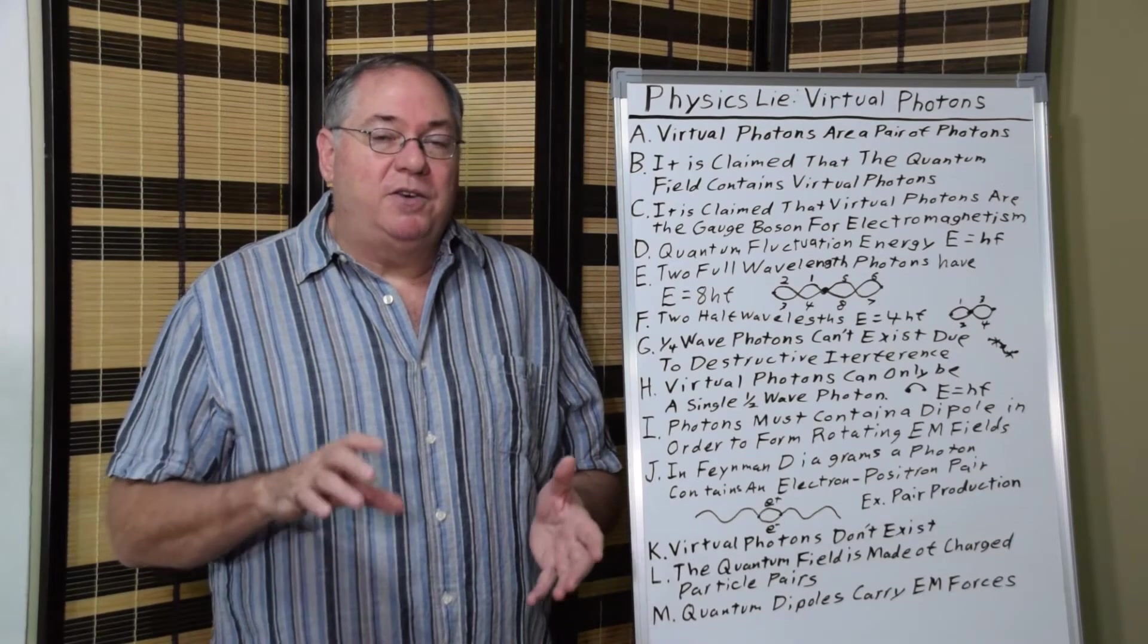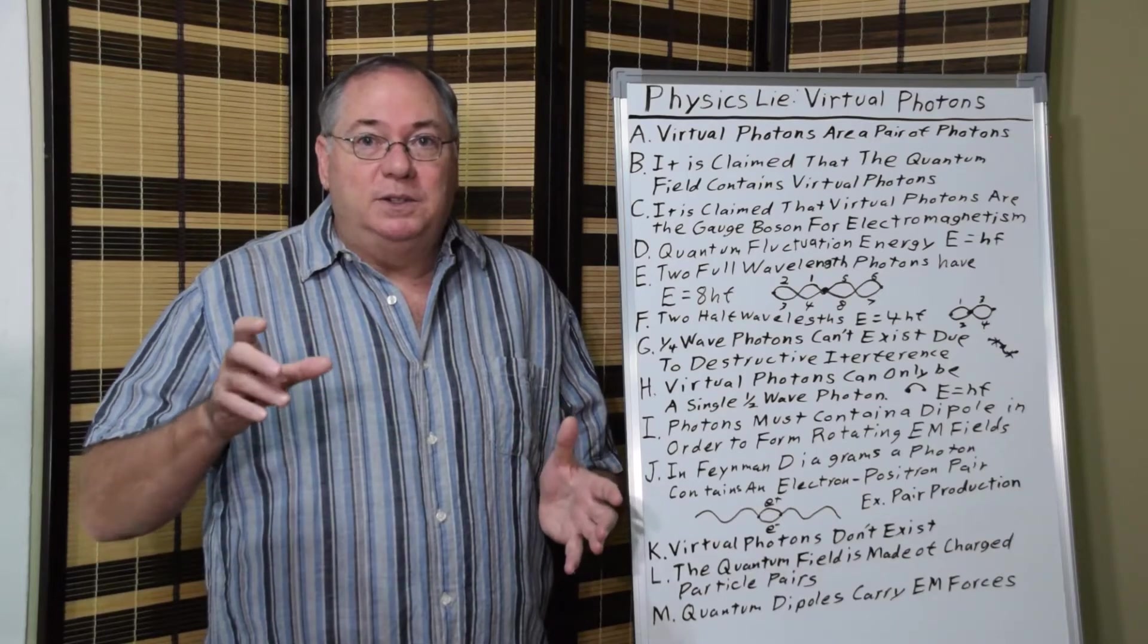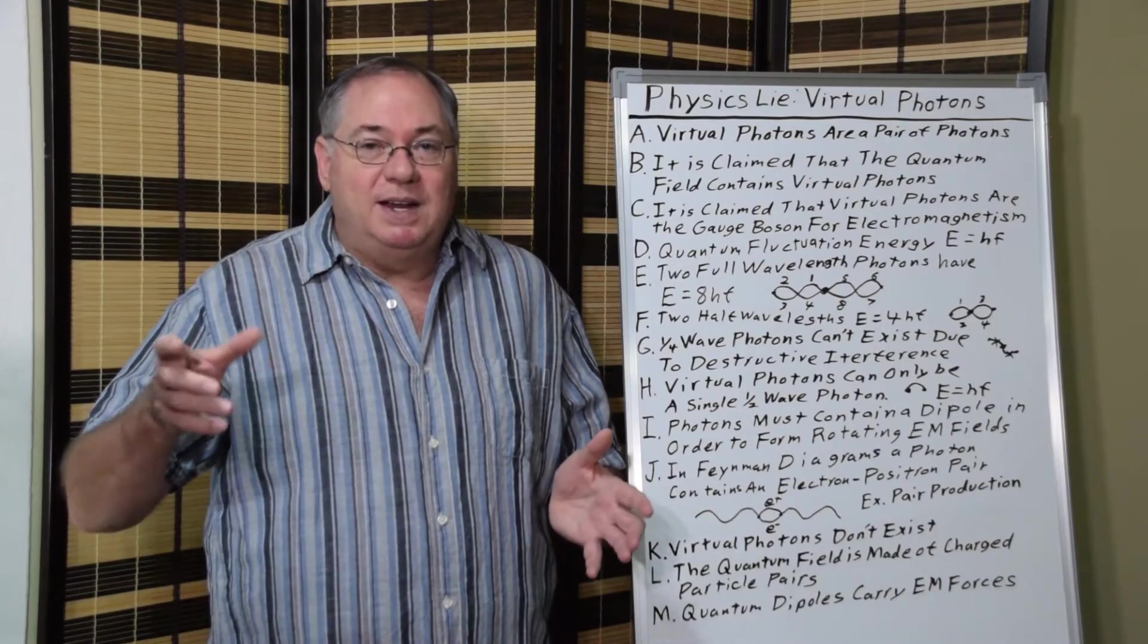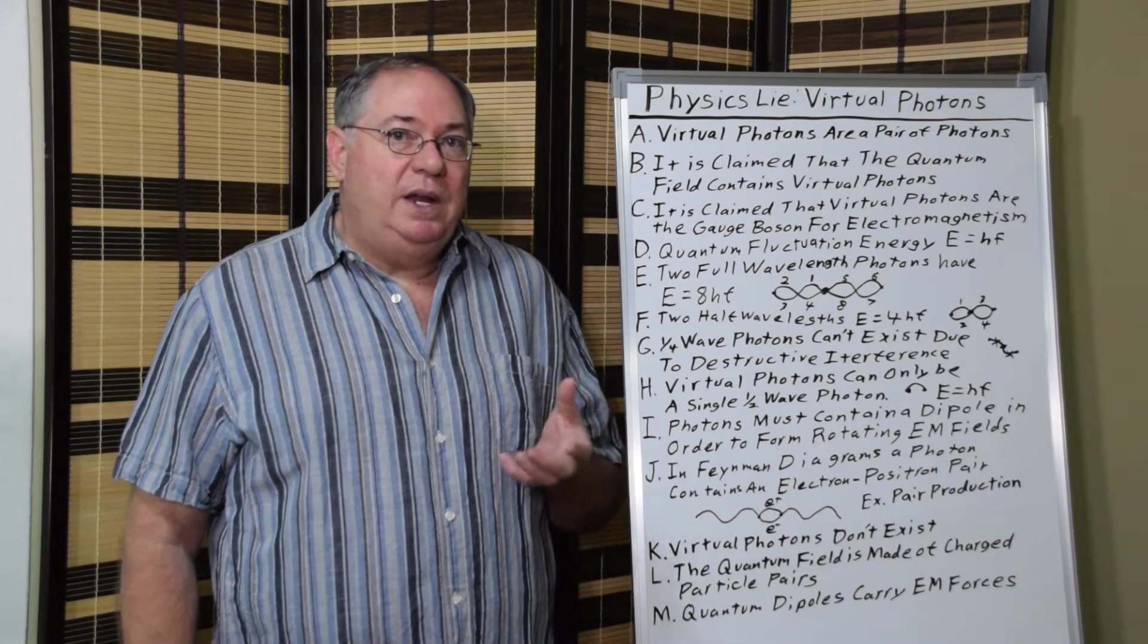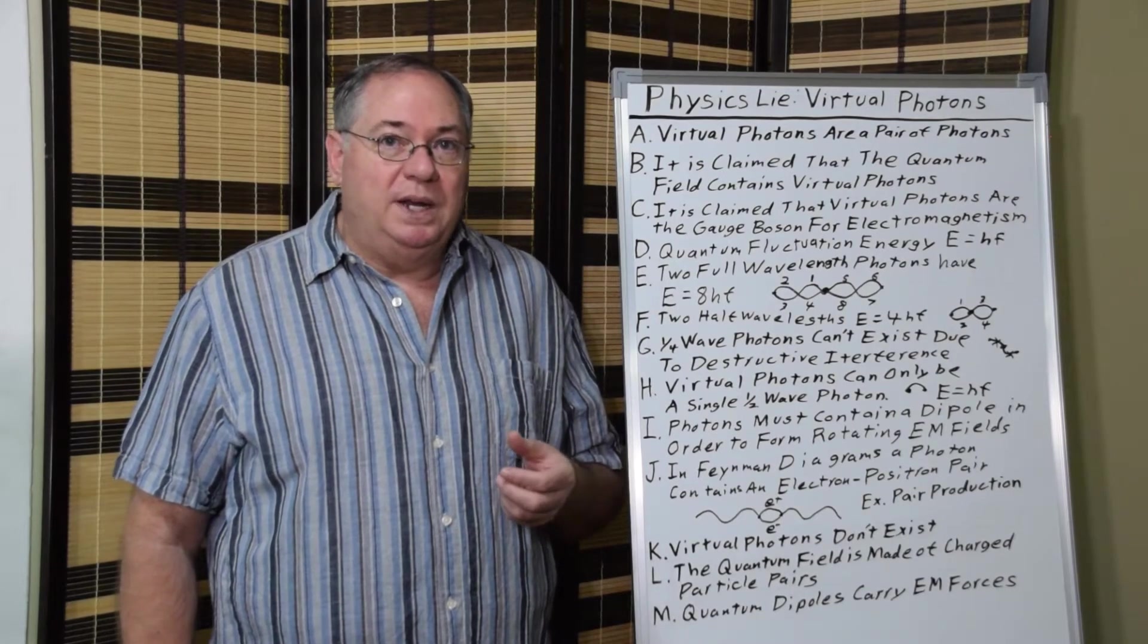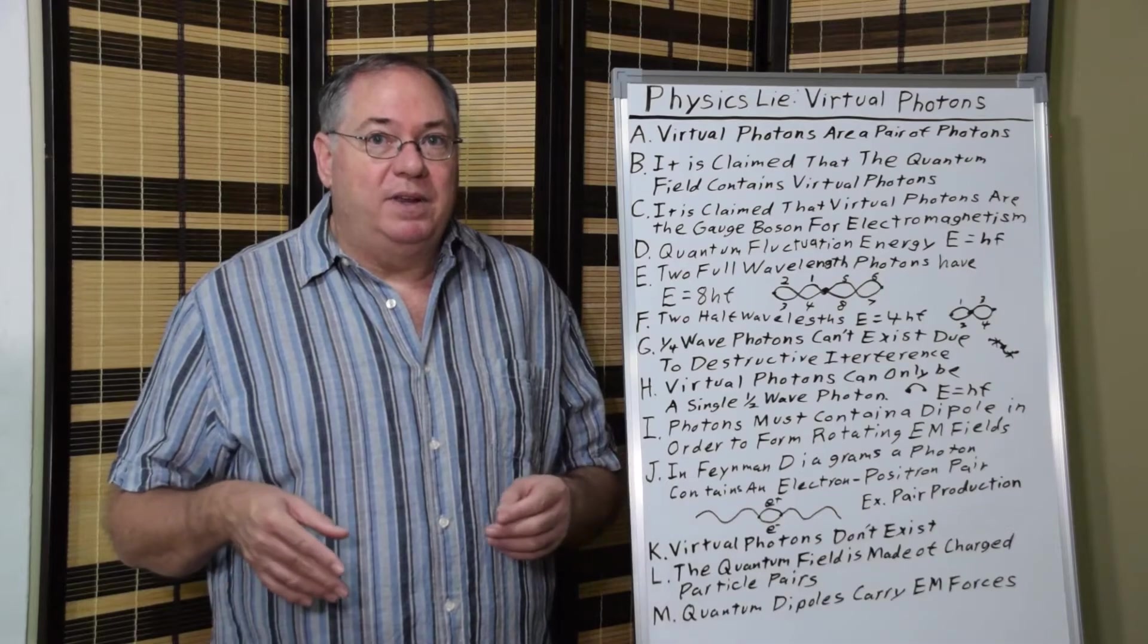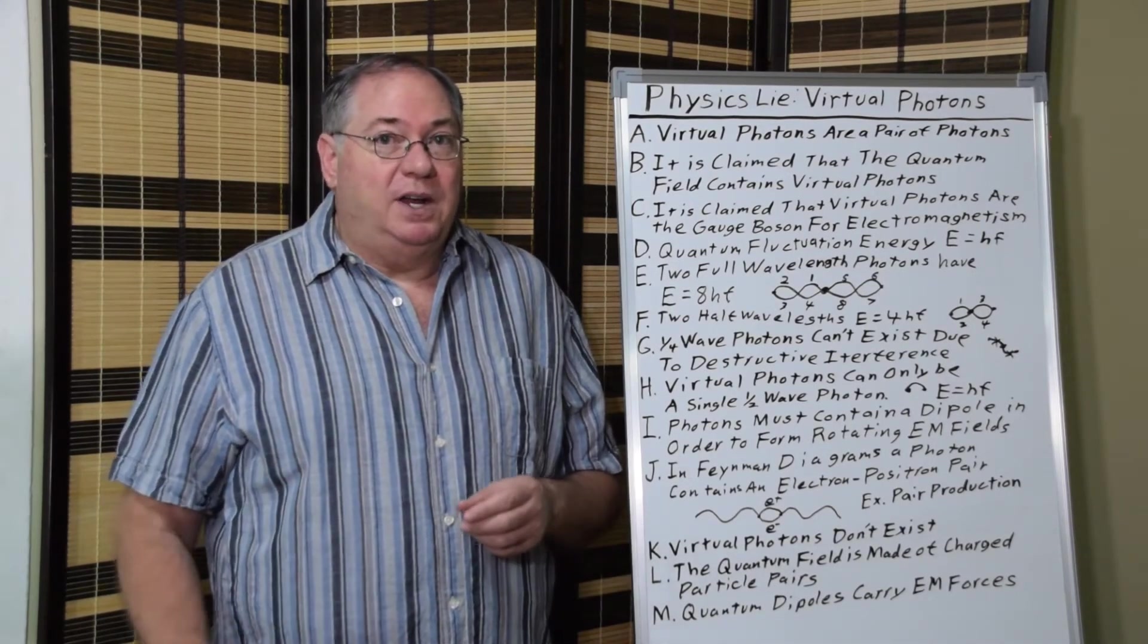So the electric and magnetic fields are real, and they propagate through space because of the quantum field interactions with these dipoles that fill all space. So the real answer to what is the gauge boson of electromagnetic field are the quantum fluctuations, but they're particle pairs, they're not virtual photons.